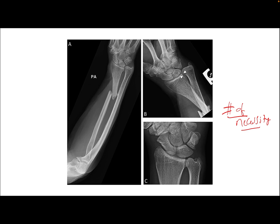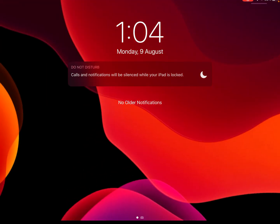Now, how do you remember this? There is a mnemonic which is widely used: GRIMUS — G-R-I-M-U-S. This is to remember the fractured bone. G for Galeazzi, in which the radius — the inferior part of the radius — is fractured. M for Monteggia, in which the ulna — the superior part of the ulna — is fractured. GRIMUS is the mnemonic. I hope you do not confuse them again — thank you.